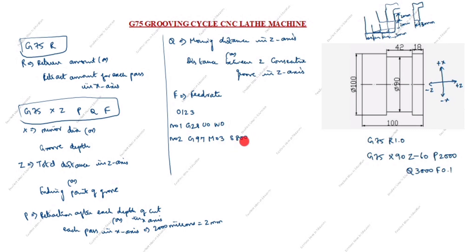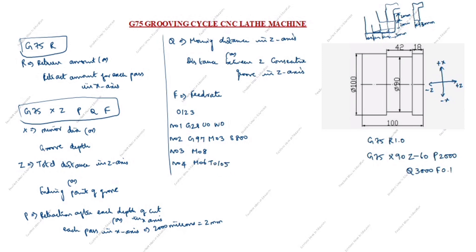You can write whatever spindle speed you need — 600, 500, or in an exam if they give 1500, write 1500. N03: M08 — coolant on. N04: M06 T0105 — M06 is tool change, T0105 is the tool number. Here we are using a 3 mm grooving tool.